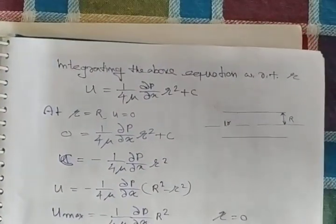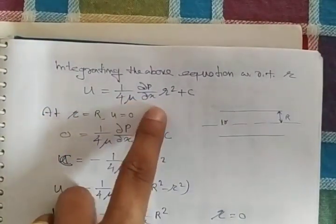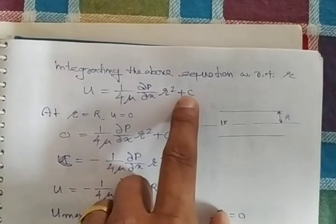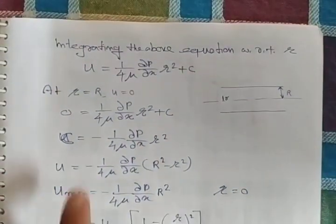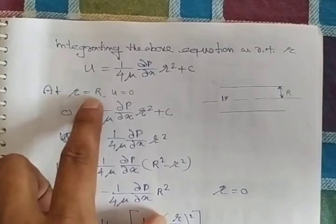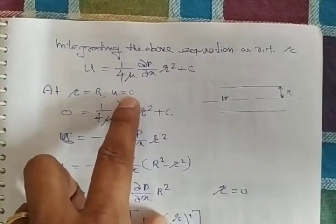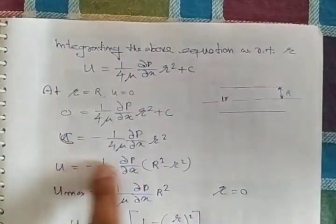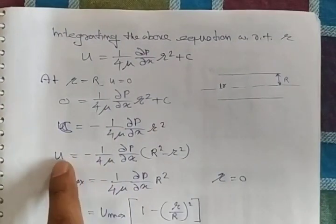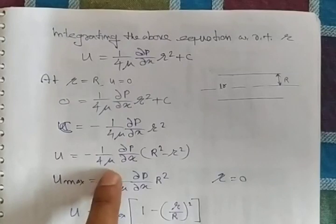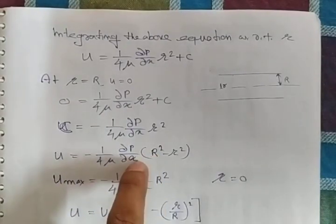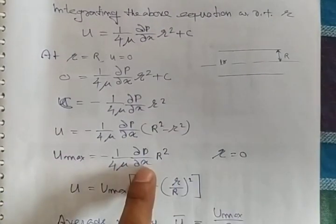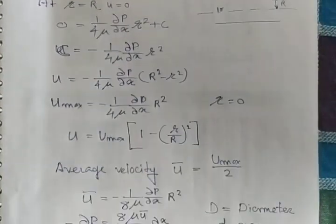If you integrate that with respect to R, you get u equals plus C, where C is the integration constant. If you put the boundary condition r equals capital R, u will be 0. At the walls, velocity is 0, and you will get the equation u equals minus 1 by 4 mu dp by dx times capital R squared minus small r squared.